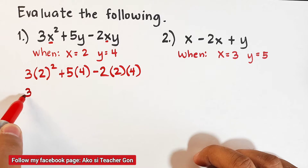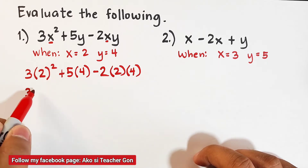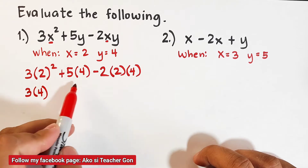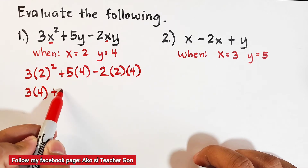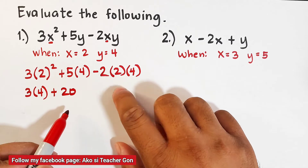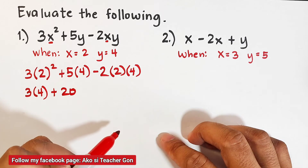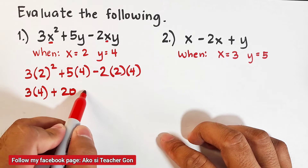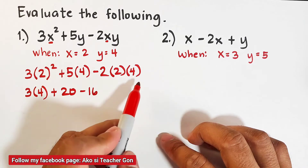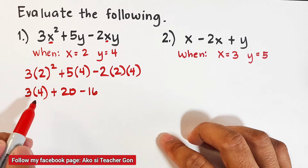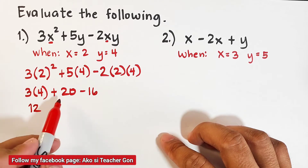We will copy first the 3, because we will evaluate 2 squared — 2 squared is the same as 2 times 2, so that is 4. Then plus 5 times 4, which is 20. And here we have negative 2 times 2 times 4 — negative 2 times 2 is negative 4, times 4 is negative 16.